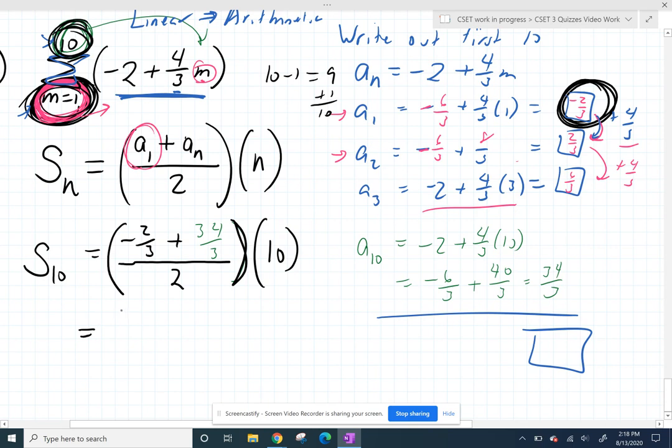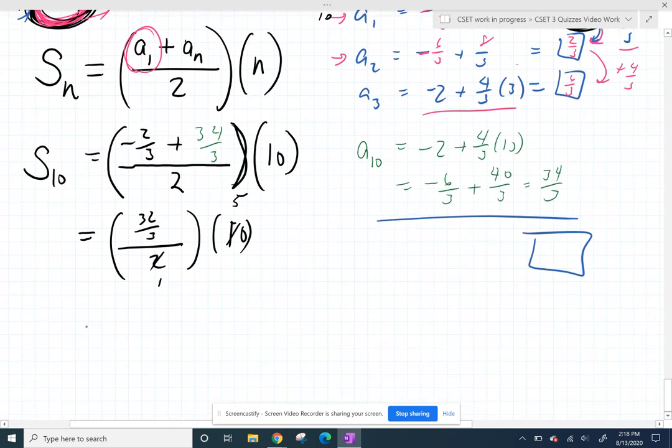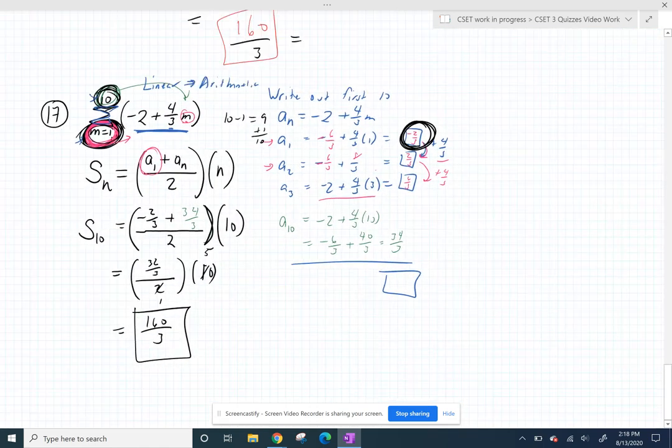But back to this one, if I just add the top, negative two-thirds plus thirty-four-thirds is thirty-two-thirds divided by two times the ten. So I'll reduce, make that a five. And thirty-two times five is one hundred and sixty. So we have one hundred and sixty-thirds. And that is the sum of the first ten terms of that sequence. I scribbled all over it, but hopefully it makes a little sense.